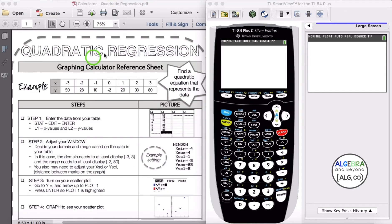Okay, we are going to look at this quadratic regression calculator sheet and use our TI-84 calculator to find a quadratic equation that represents the data in this table.